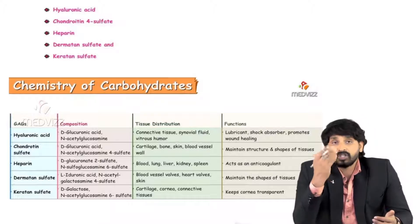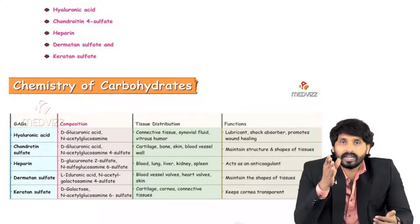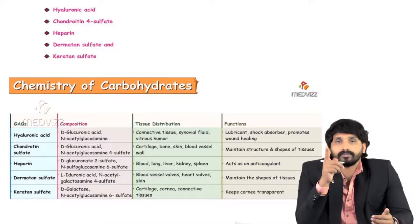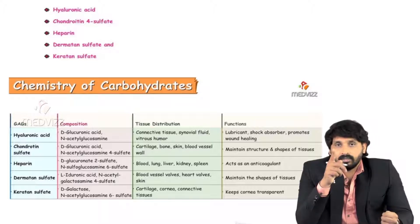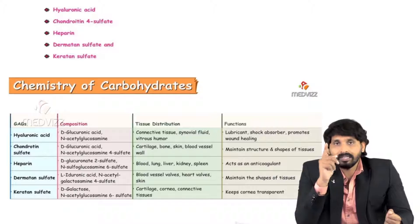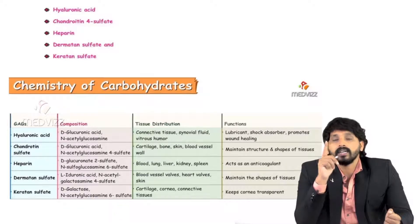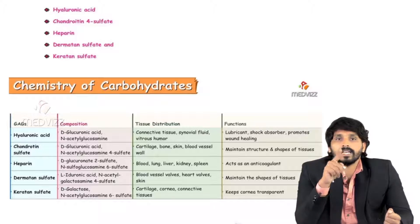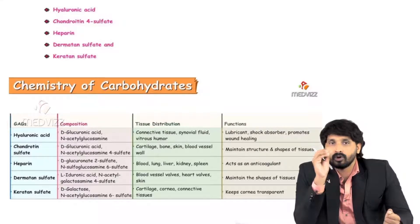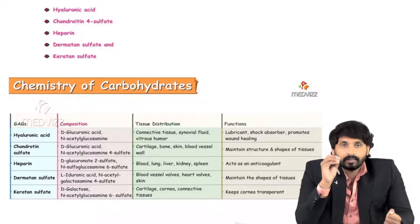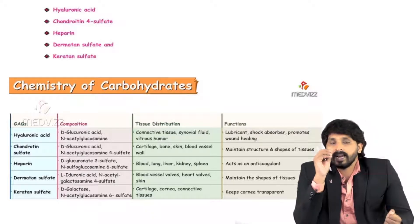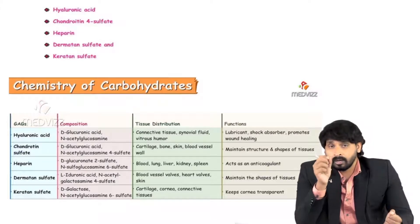Coming to hyaluronic acid: it is made up of D-glucuronic acid. When glucose undergoes oxidation, the last CH₂OH undergoes oxidation to form COOH — that is glucuronic acid. This glucuronic acid combines with the modified sugar N-acetylglucosamine, where the amino group is attached and acetylated at the second carbon. N-acetylglucosamine and glucuronic acid together form hyaluronic acid.